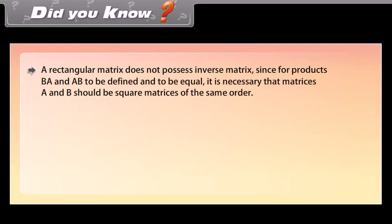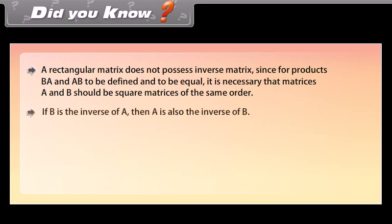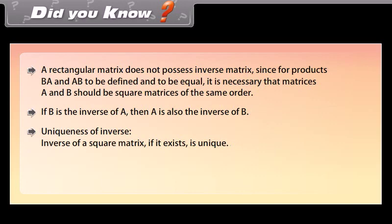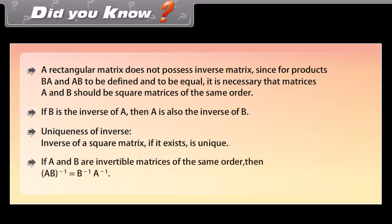Did you know: A rectangular matrix does not possess an inverse, since for products BA and AB to be defined and to be equal, it is necessary that matrices A and B are square matrices of the same order. If B is the inverse of A, then A is also the inverse of B. The inverse of a square matrix, if it exists, is unique. If A and B are invertible matrices of the same order, then inverse of AB is equal to inverse of B times inverse of A.